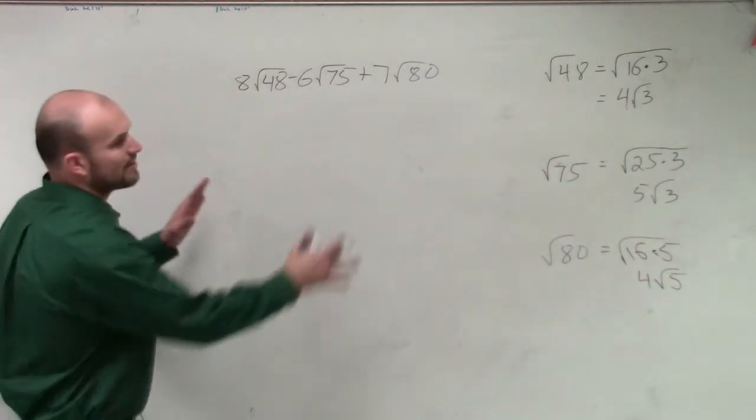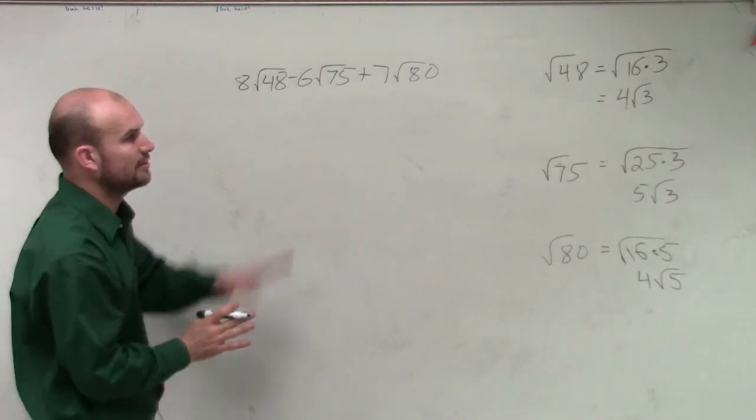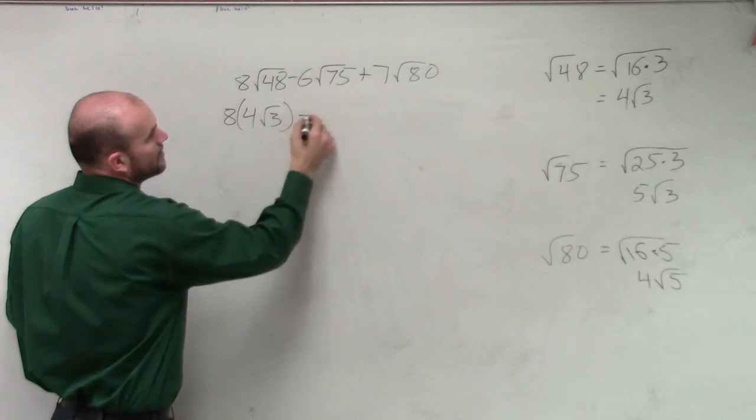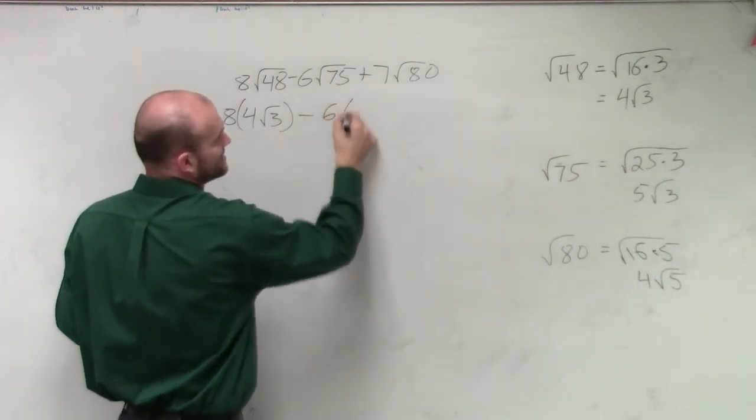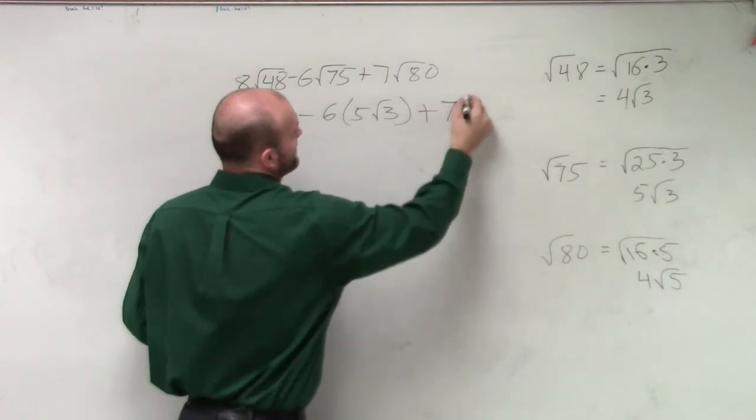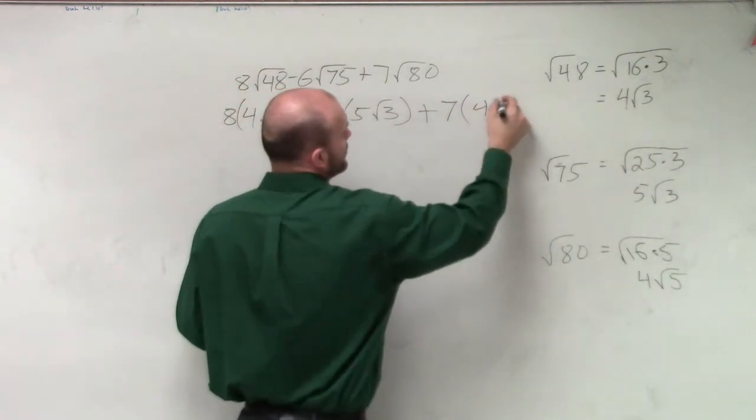So now what I'm going to do is I'm going to replace each one of those simplified square roots in for my answer. So I have 8 times 4 radical 3, minus 6 times 5 radical 3, plus 7 times 4 radical 5.